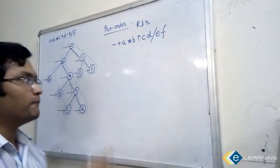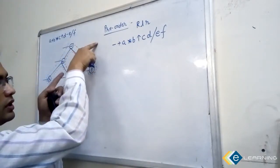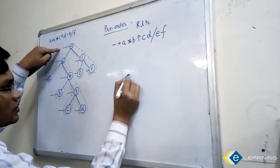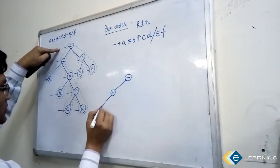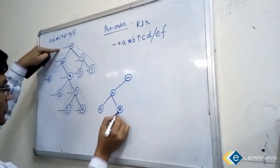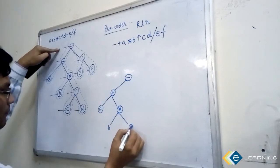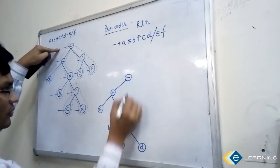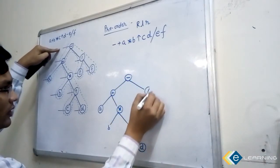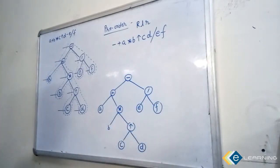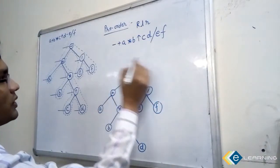Similarly in post-order, mark a line post to this node and traverse from here. Let me draw this again: this is A, star, B, power, C and D, divide, E and F. This is the expression tree. Now I want to find the post-order of this tree.